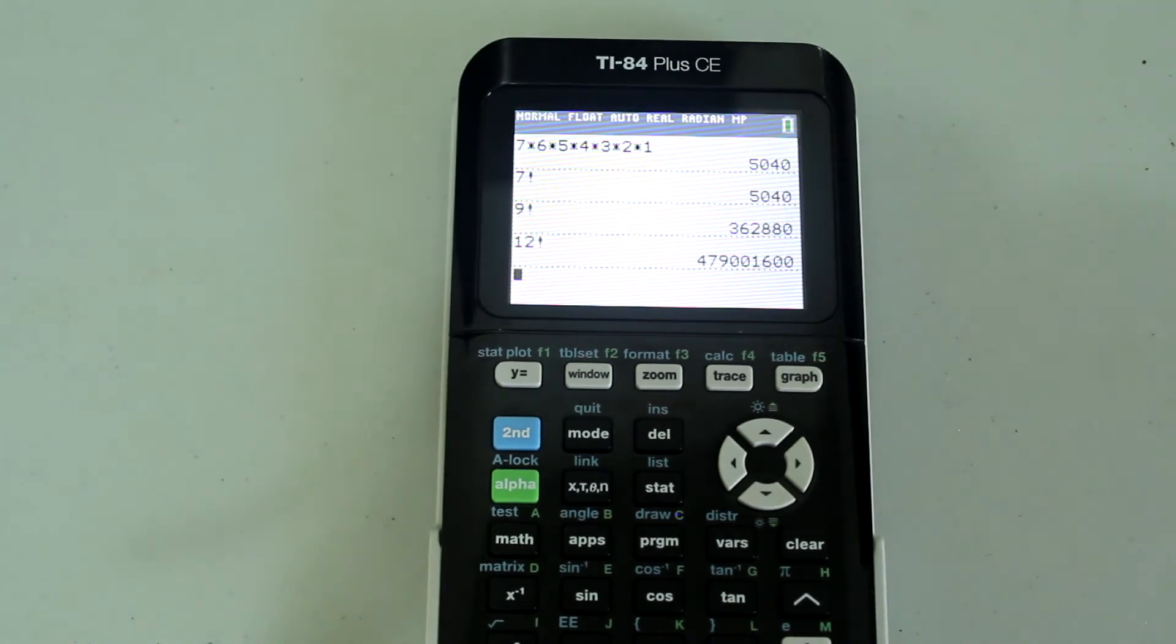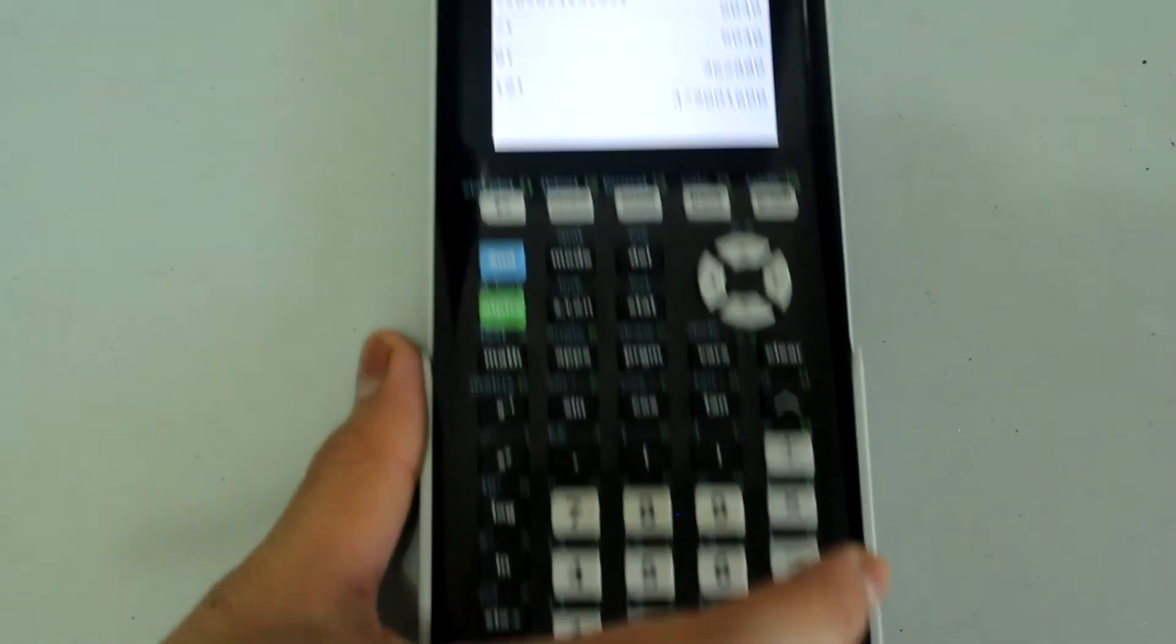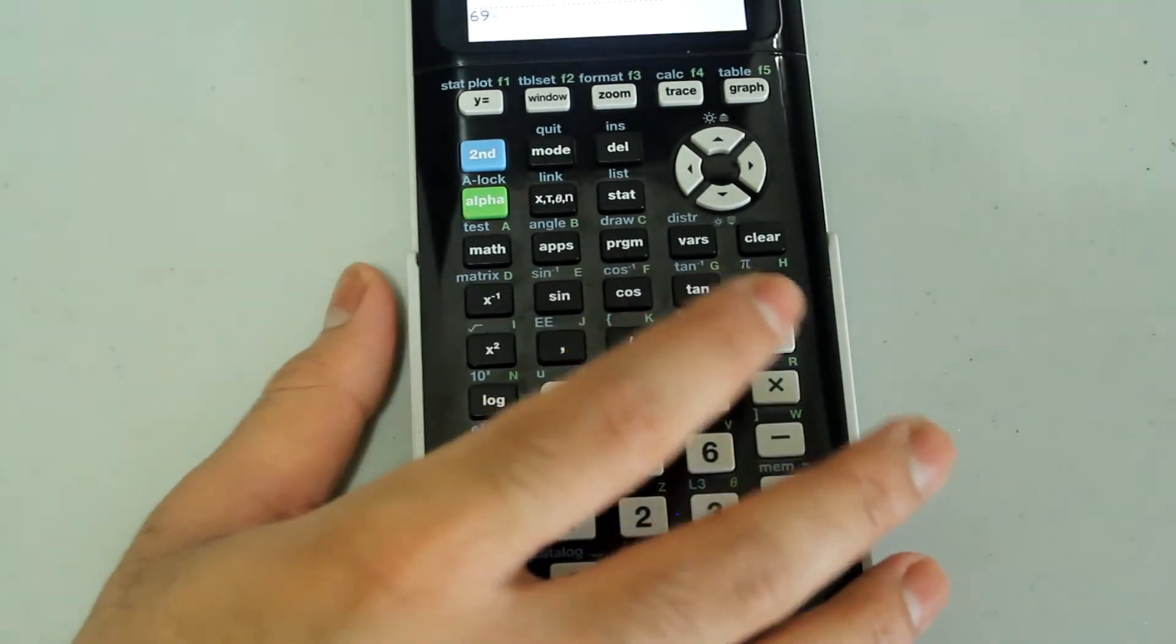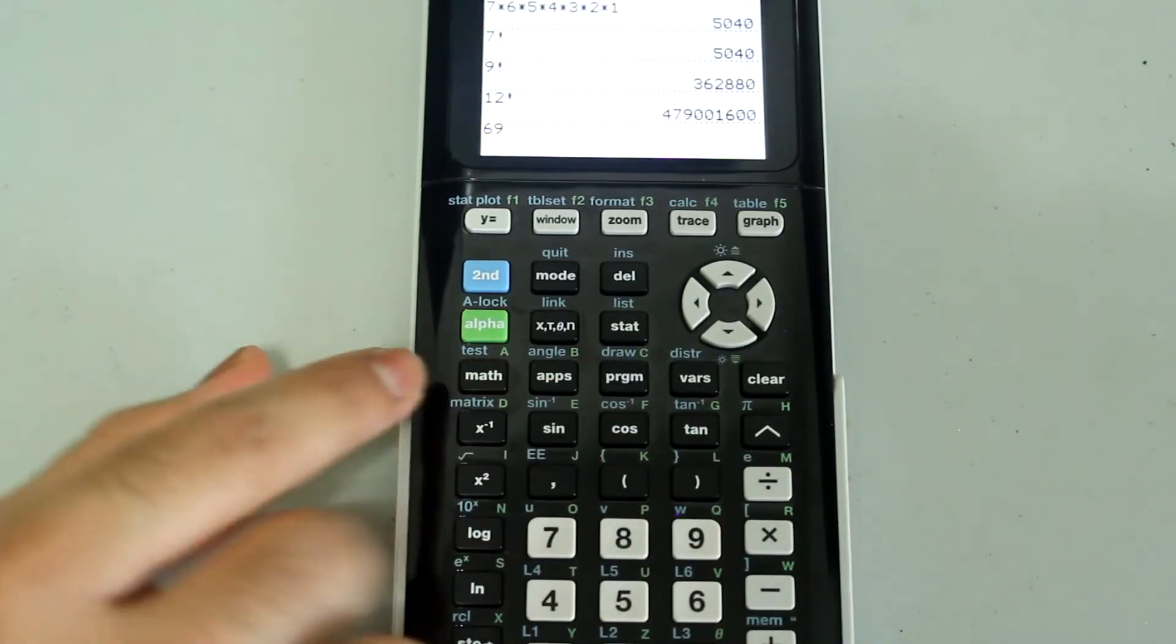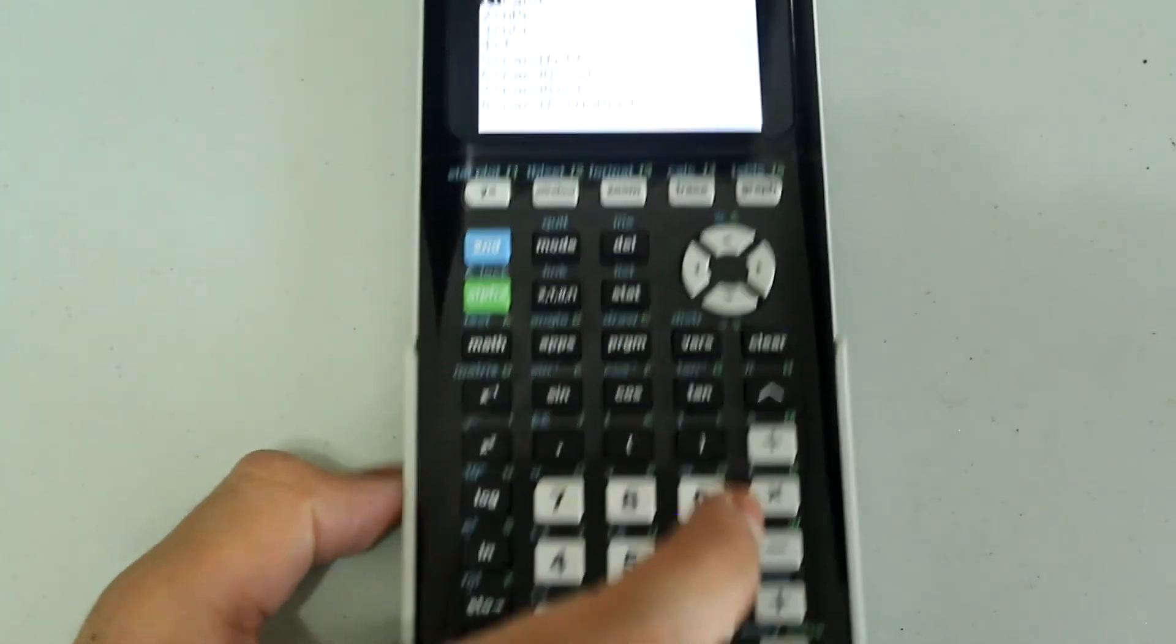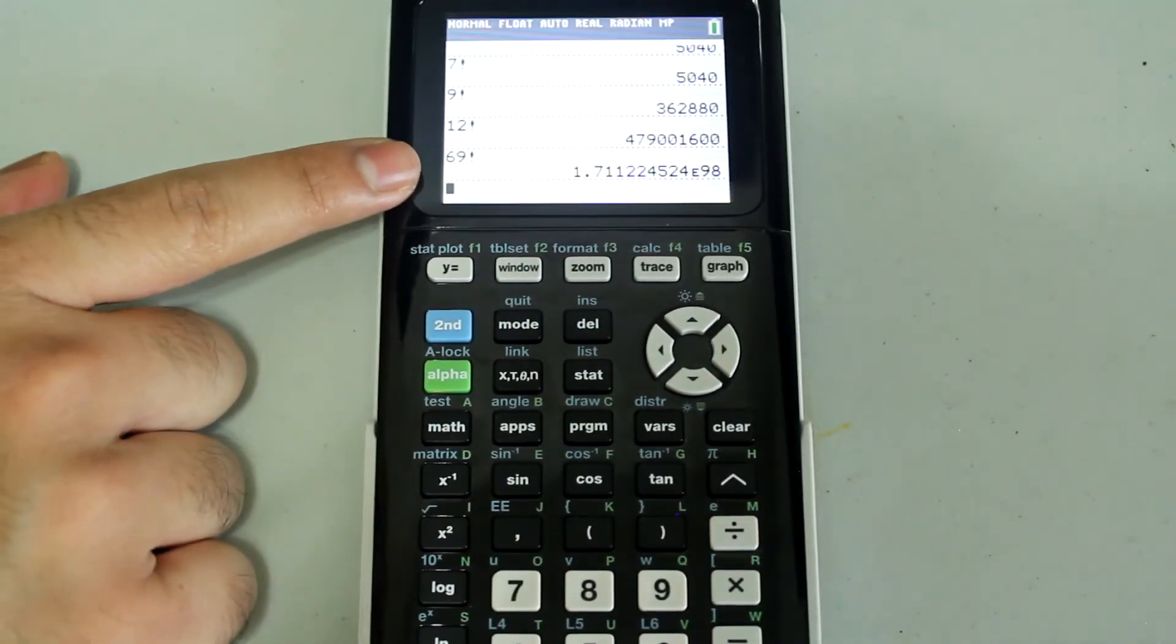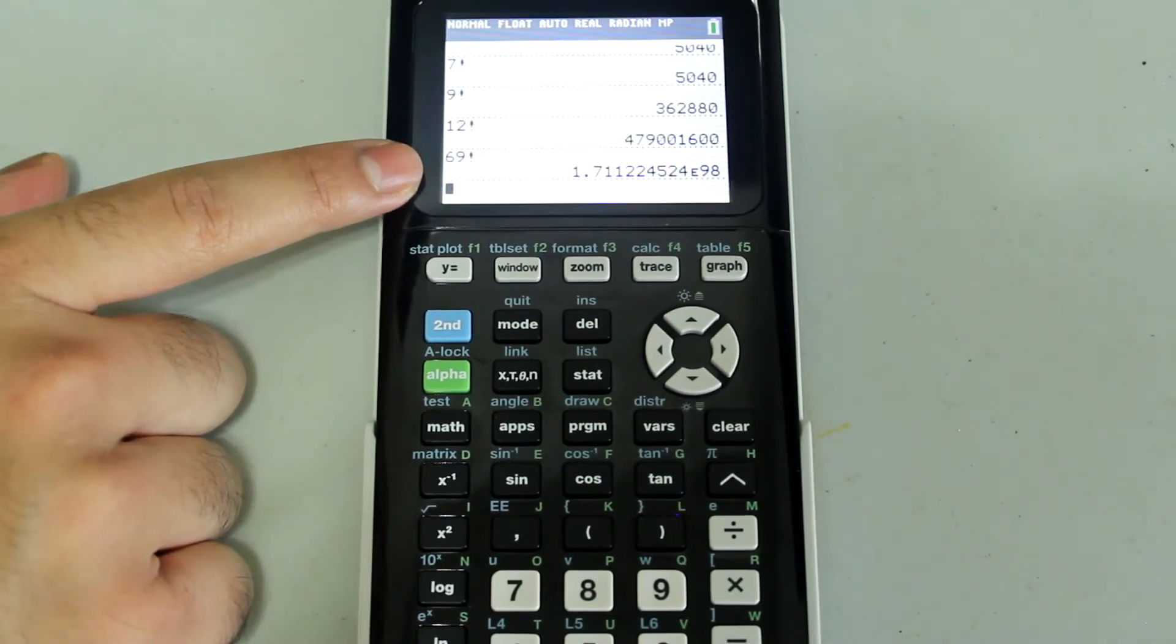One thing I wanted to point out is that the calculator cannot do factorials past 69. We can do 69 factorial though. So 69, that's what I have on the screen so far. Math, probability, and just press number 4. So this is what I have: 69 factorial. Press enter, and I can have 69 factorial calculated by the calculator.